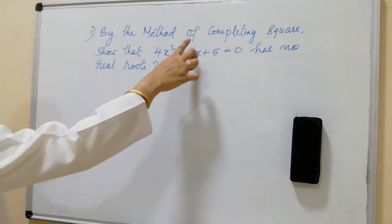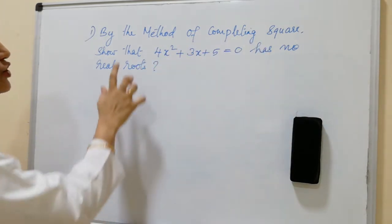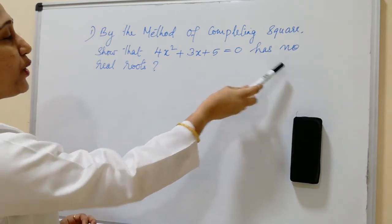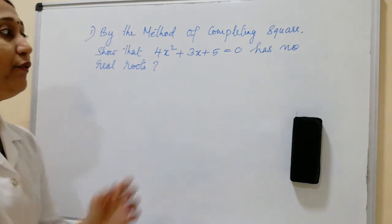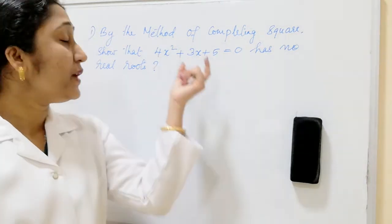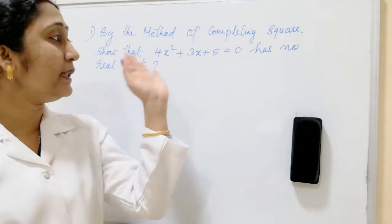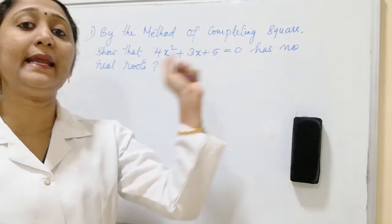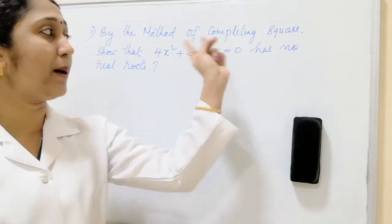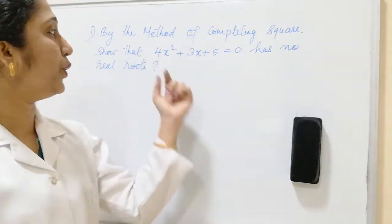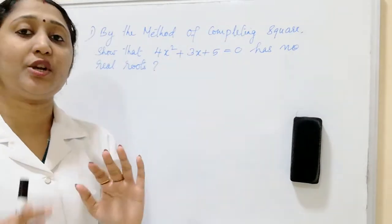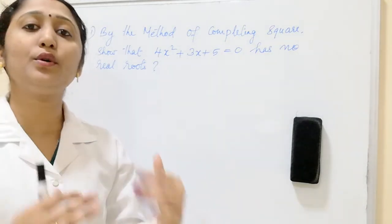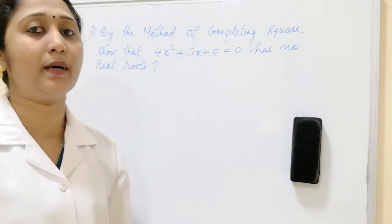By the method of completing the square, show that 4x² + 3x + 5 = 0 has no real roots. We are given a quadratic equation and we have to show that it has no real roots using the completing the square method. We have to prove this quadratic equation has no real roots.